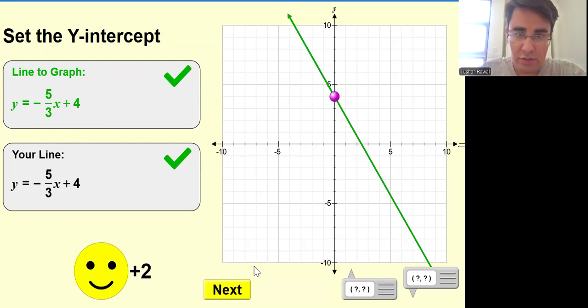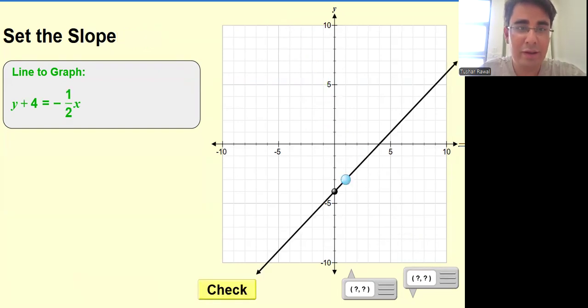And second question, let me just shift my panel. It's disturbing coming again and again. Anyway, so this particular form is y minus y one equals to slope x minus x one. Okay, so I can just shift this four to the other side.